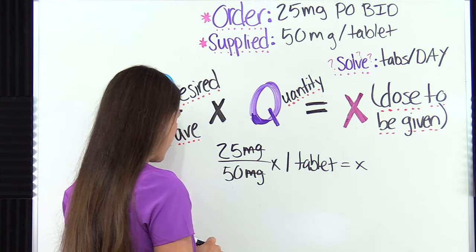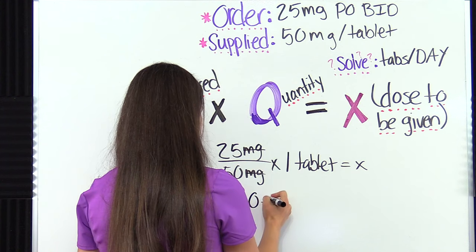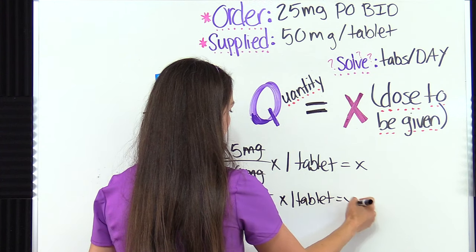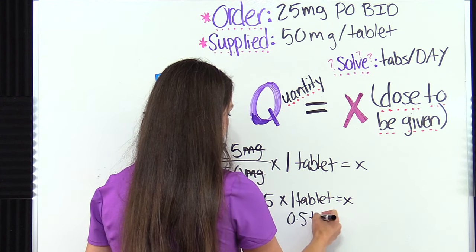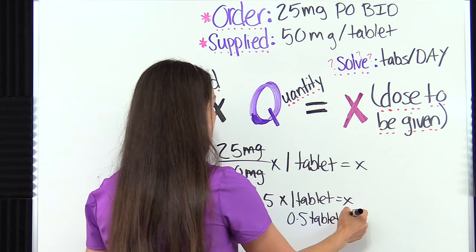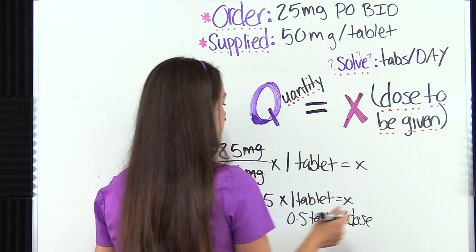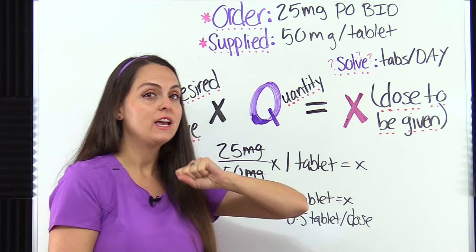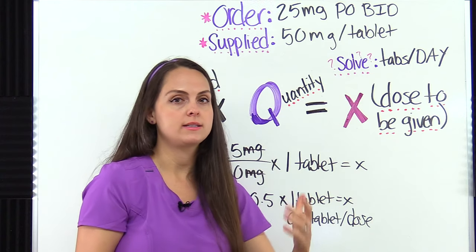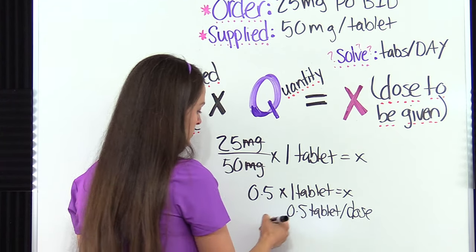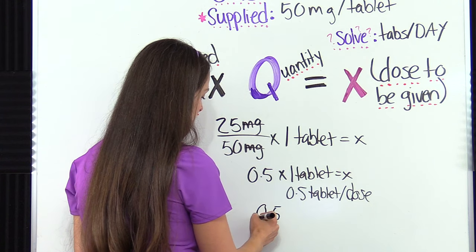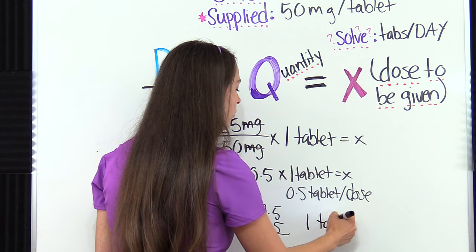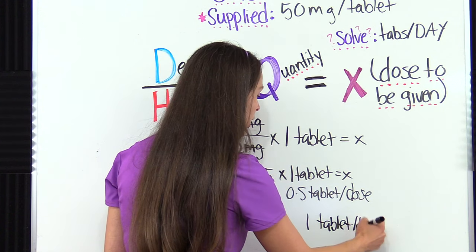So we divide: 25 divided by 50 gives us 0.5, times one tablet equals 0.5 tablets — half a tablet per dose. But they want to know how many for the whole day. The patient is getting this BID — twice a day — so each dose is 0.5 tablets. 0.5 plus 0.5 gives you one. So the patient for the whole day is going to get one tablet per day.